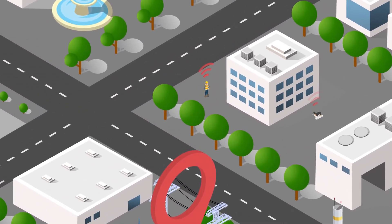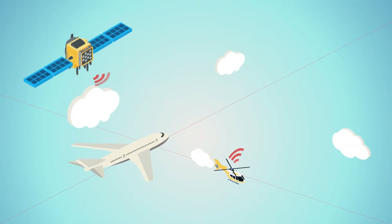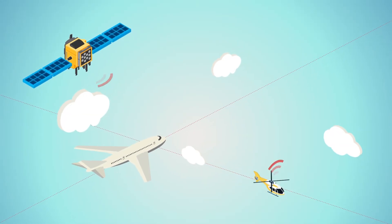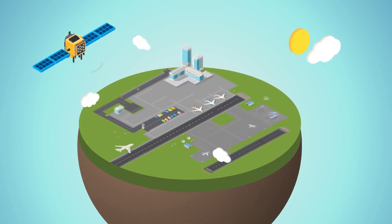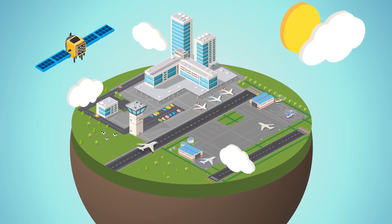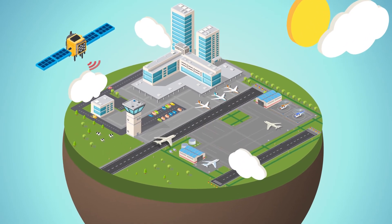Mapping utilities or finding your lost dog. EGNOS makes aviation safer, more efficient, cleaner and less noisy by providing extremely reliable and accurate vertical guidance.